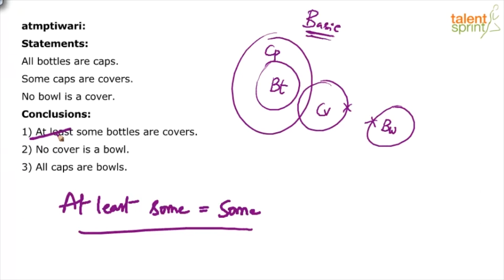So the conclusion says some bottles are covers. Do you really see that? No. When you look at the basic diagram, you find that no bottle is a cover. There's no overlapping between bottles and covers at all. So this is wrong. Conclusion number one is wrong.